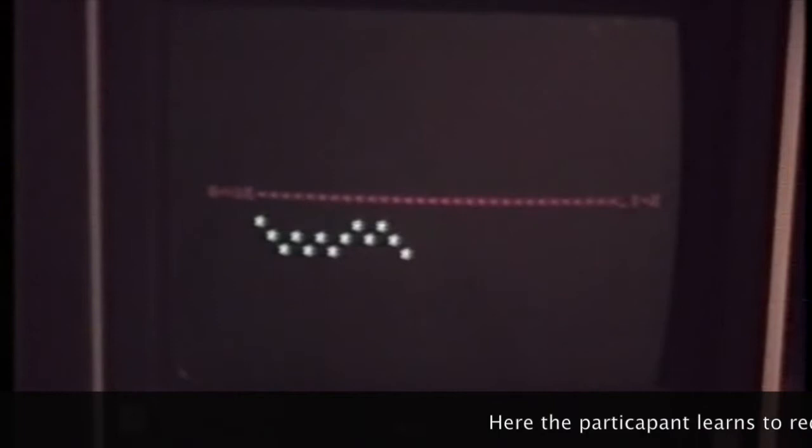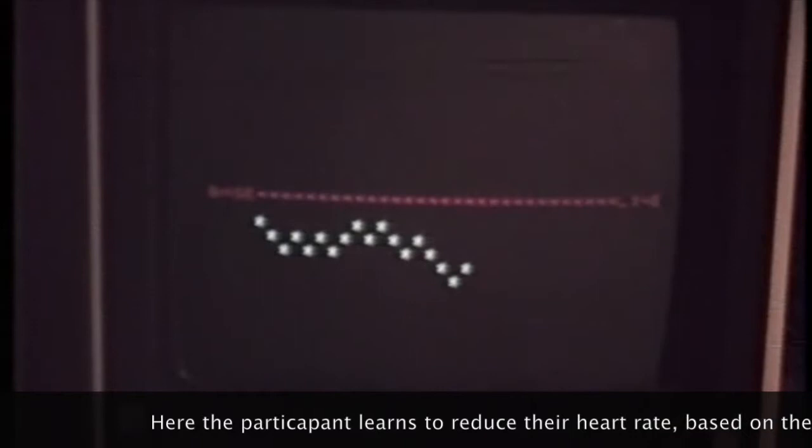In this instance you can see on the TV screen a continuously changing graphical display. This shows our subject's heart rate as it changes each second. You can see that the changes are shown relative to a central red baseline position.